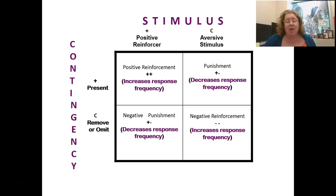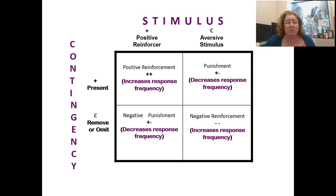Here's another graph that helps explain punishments, rewards, presentations, and all of that. We've got contingencies — whether we present or remove something. We have positive reinforcers and aversive stimuli, giving us positive reinforcement, punishment, negative punishment, and negative reinforcement. You can see how all of this works together. Take some time with this, really absorb it, and think about what these terms mean.